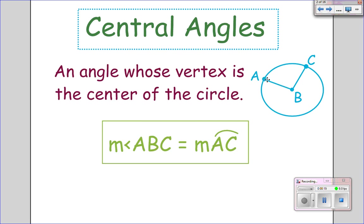Now remember, the measure of the central angle, so angle ABC, equals the measure of the arc that it intercepts or that it crosses. So if this angle here was 85 degrees, the arc it crosses would also be 85 degrees.